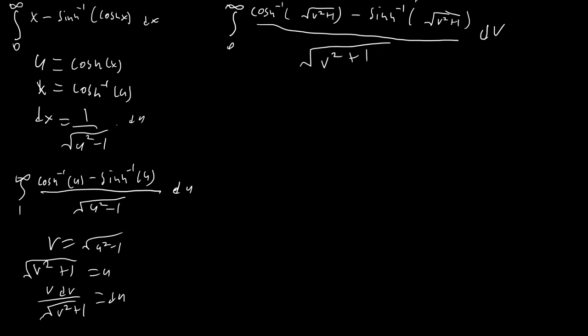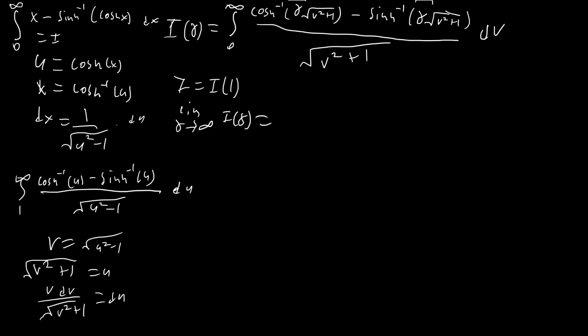I've left a space in the integrand for a specific reason — since we have √(v²+1), this is the perfect place to use Feynman integration, also known as differentiating under the integral sign. We call this I(γ), placing γ in both spots. Our original integral is I = I(1). Using the lemma we proved, as γ → ∞ the numerator goes to zero everywhere, so I(∞) = 0.